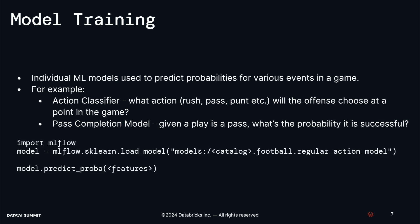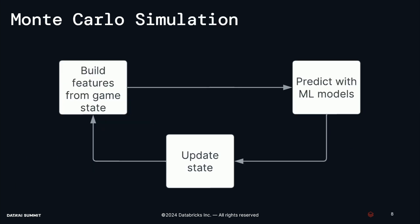Here's a code example: we're loading our action model and predicting for the same McCaffrey play with our features. I've simplified the classes slightly to just pass versus rush. For that play, our model predicted 68% of the time it will be a passing play and 32% of the time it will be a rushing play.